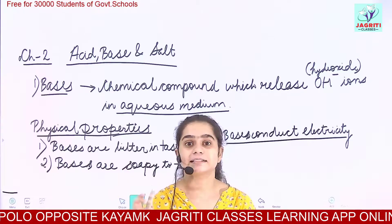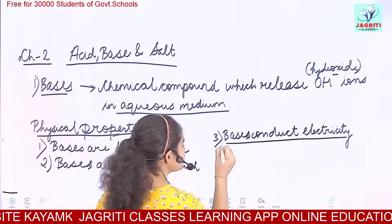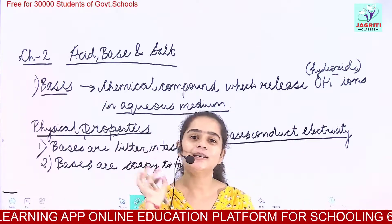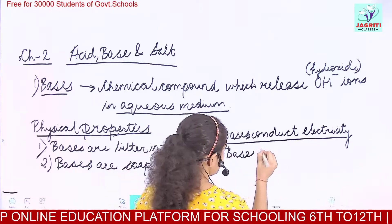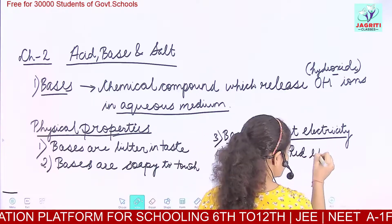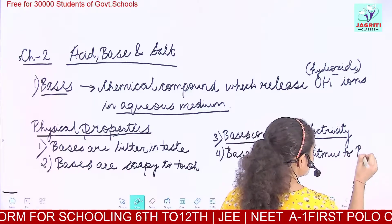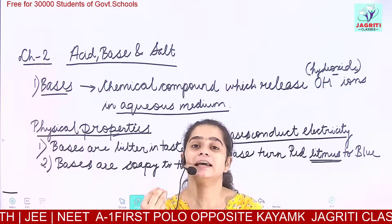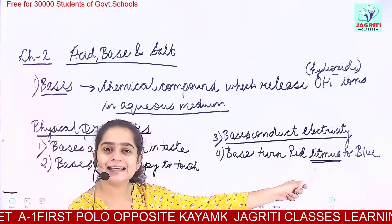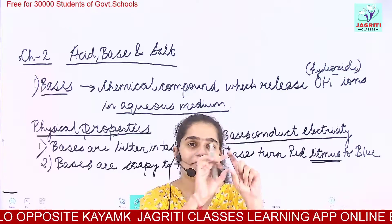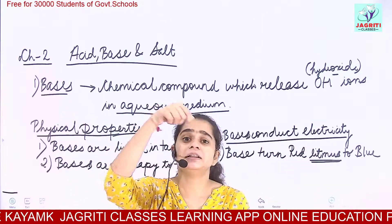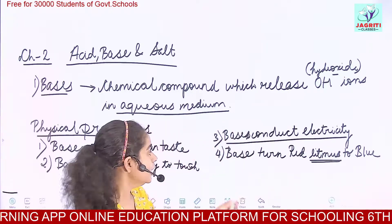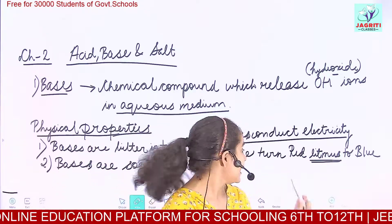The next property is reaction with litmus. Litmus is an indicator through which we can identify whether a given component or solvent is an acid or base. Bases turn red litmus to blue. Litmus is available in the form of strips and solution. If you dip a red litmus strip in a base, it would turn blue. But if you dip red litmus paper in an acid, no colour change would be observed. So acids turn blue litmus to red, and bases turn red litmus to blue.